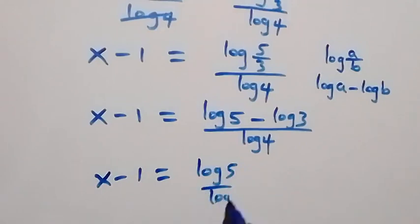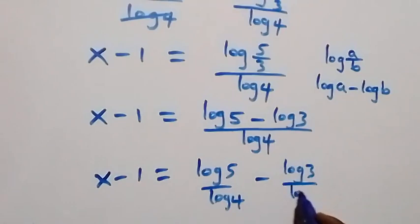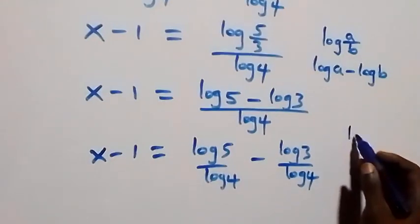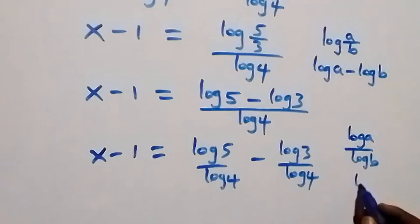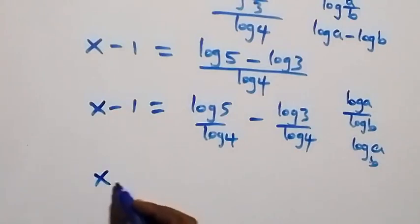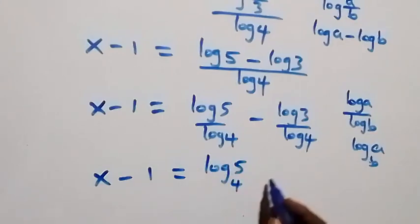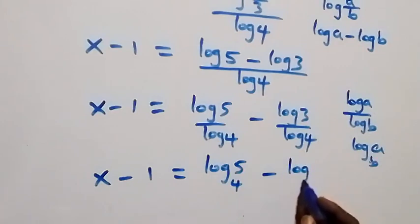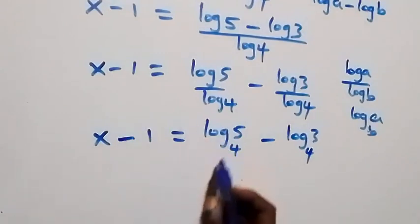We split this as log 5 over log 4 minus log 3 over log 4. Then using the change of base formula — log a over log b is the same as log a to base b — this becomes x minus one equals to log 5 to base 4 minus log 3 to base 4.